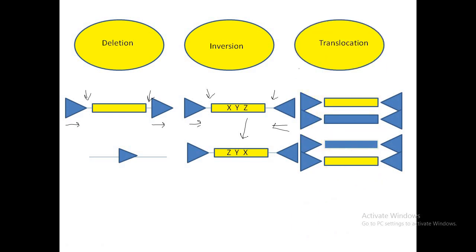Translocation will happen if these LOX P sites are present on two different strands and as a result we will see translocation between these two DNA sequences. They will undergo recombination, as a result of which this part of the segment will go to this part and this part of the segment will go to this part.